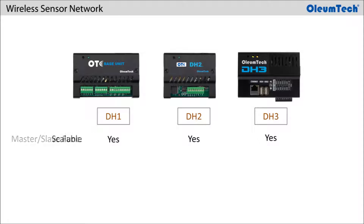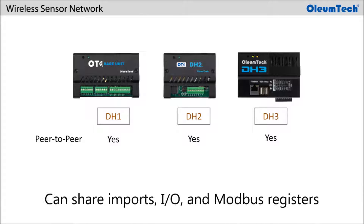Multiple gateways can be added to a network to support more nodes and expand the size of the network, providing high scalability and flexibility. All gateways in the same network can communicate with each other by sharing its points, its mapped inputs and outputs, and Modbus registers.